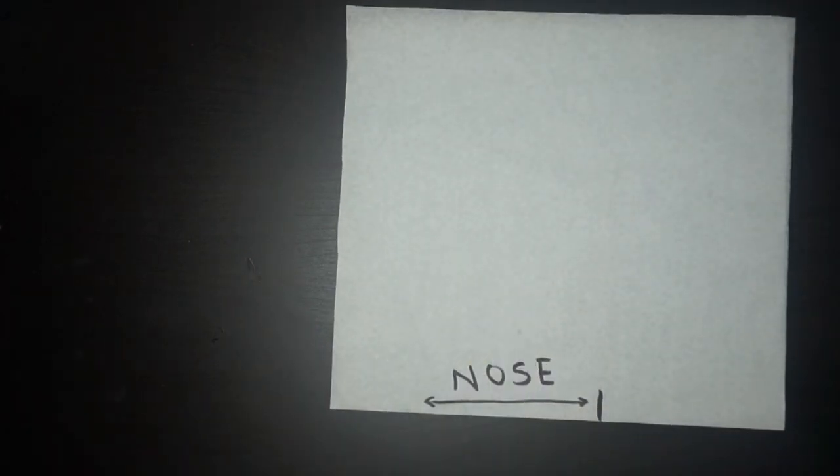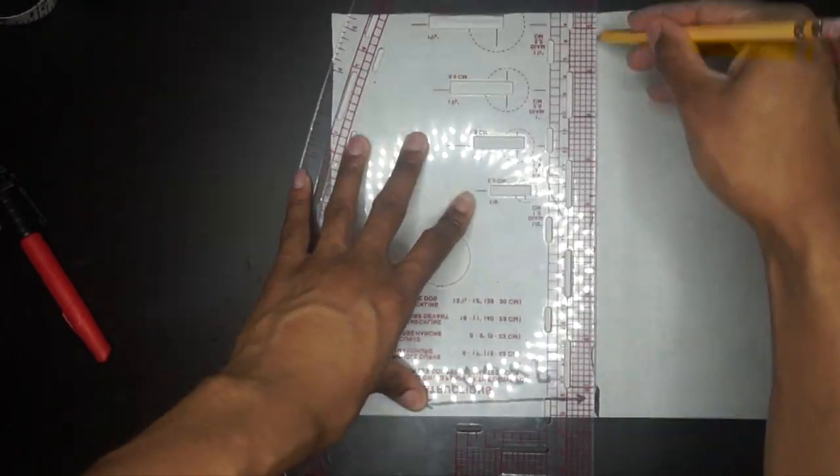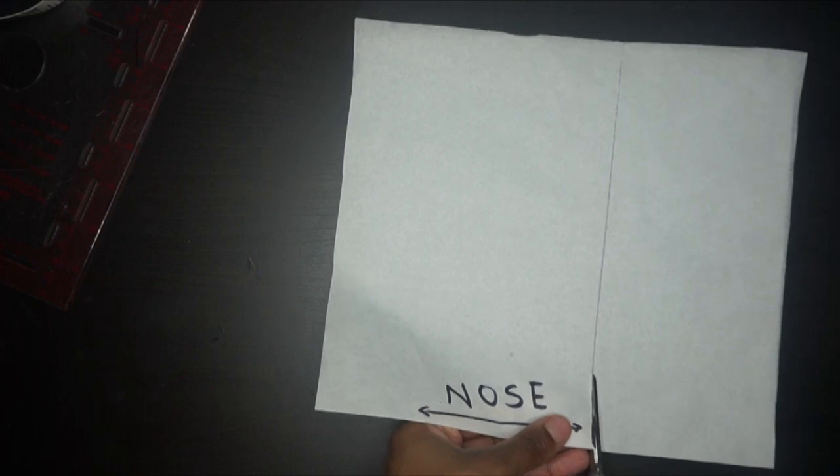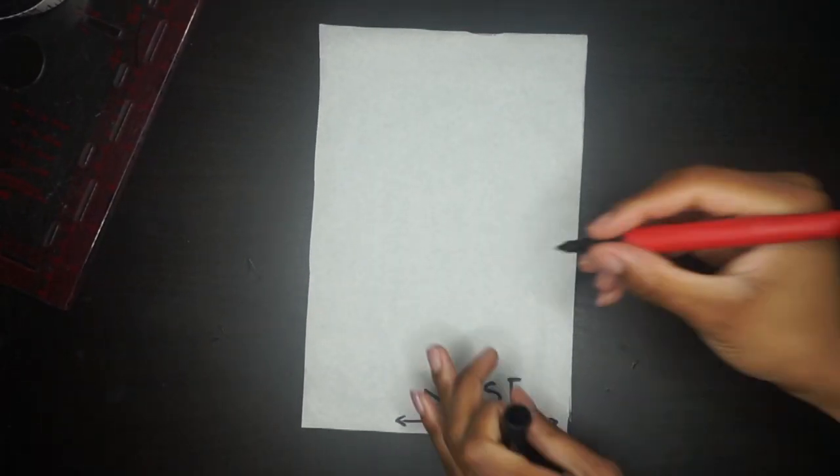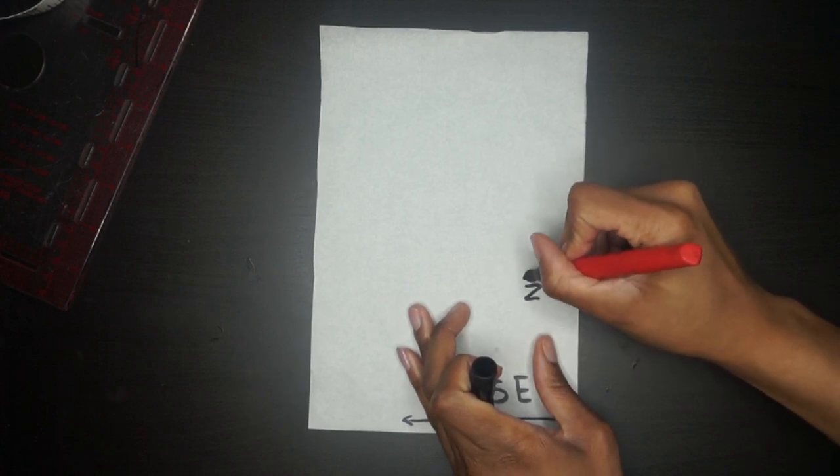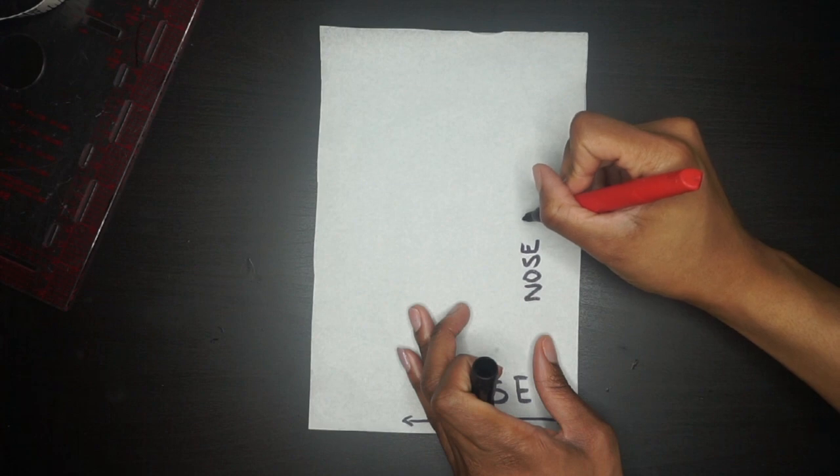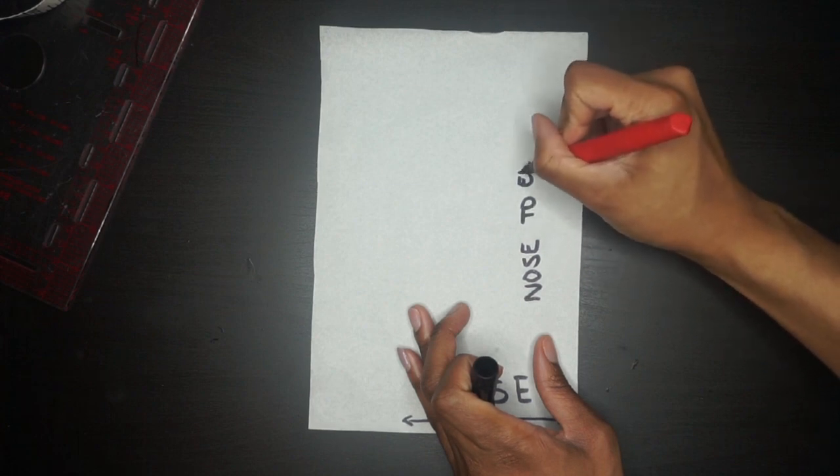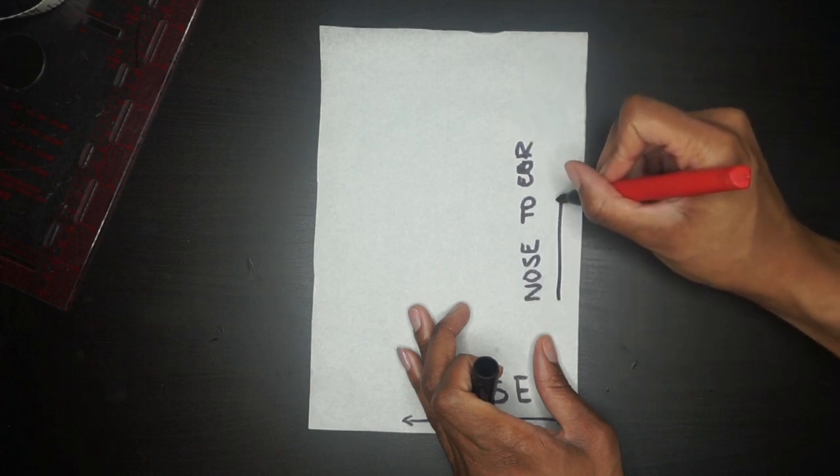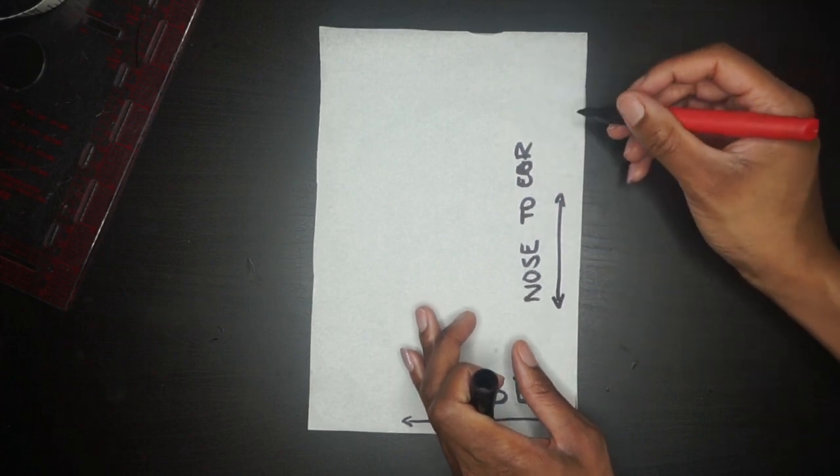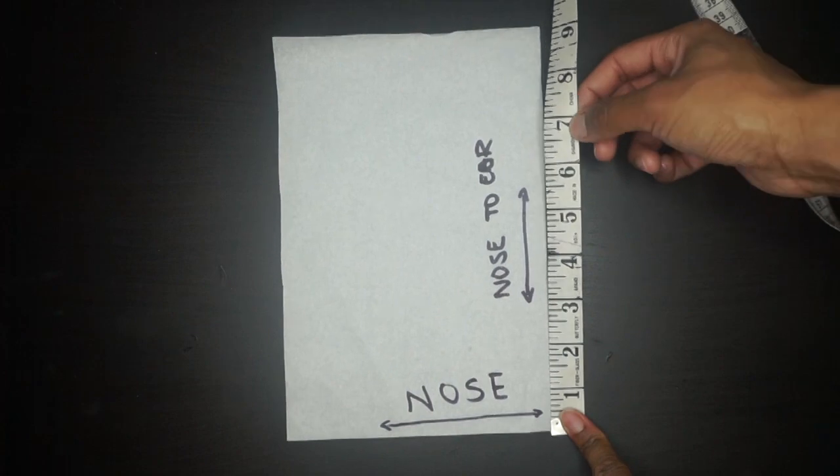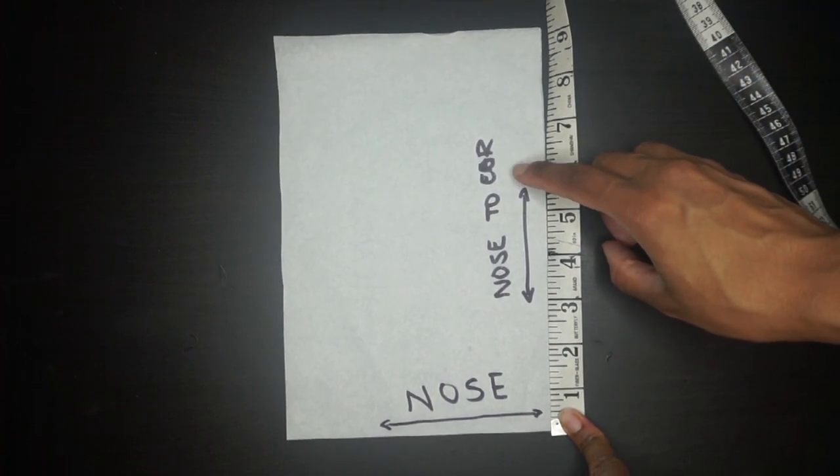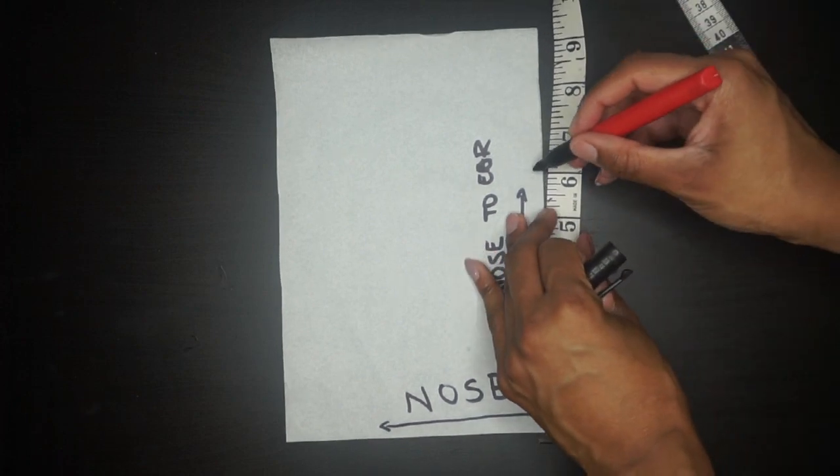The measurement that I got is six inches, so you're going to mark six inches, make a straight line across, and then cut the excess piece off. Now we're going to mark our nose to ear measurement. That measurement again happened to be six inches.